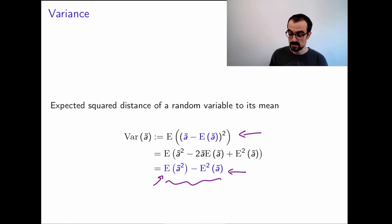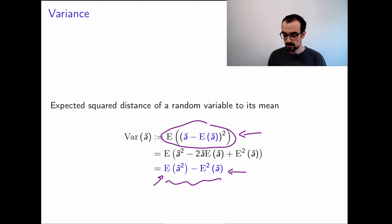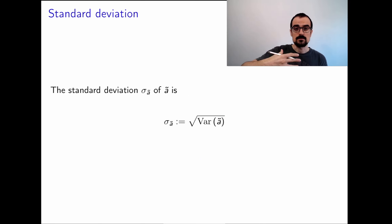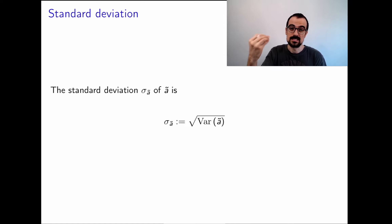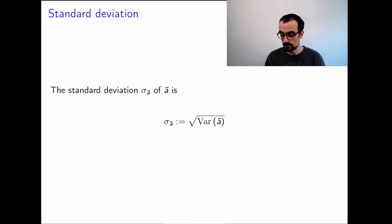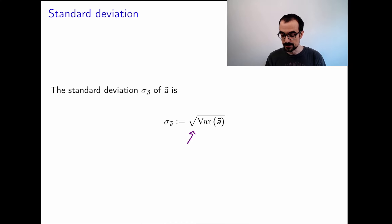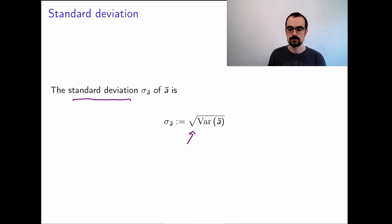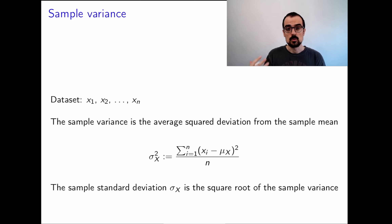Because the variance is an expected value of a square, it's not in the same order of magnitude as the quantity we're modeling. Because of that, we often take a square root to bring it back to the original units. That gives us the standard deviation — the typical deviation of the random variable from its mean, obtained by computing the variance and then taking the square root.